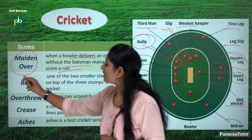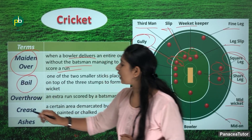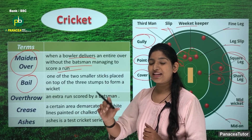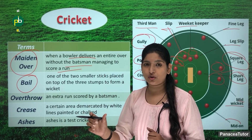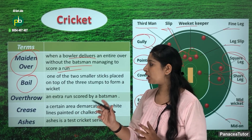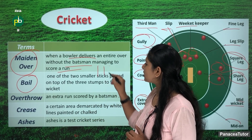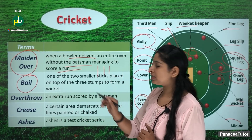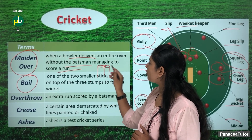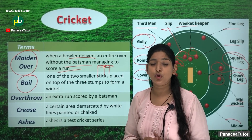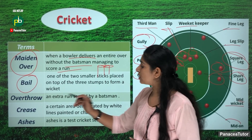The next one is bail. What is bail? You have 3 stumps, and there are little wooden pieces on top of the stumps — these we call bail.